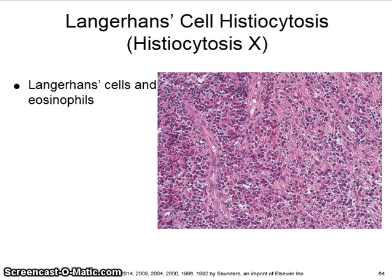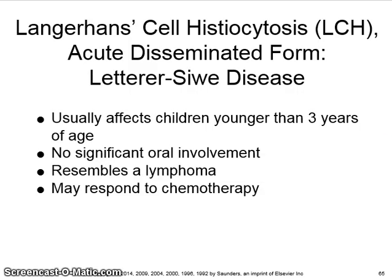Langerhans cell histiocytosis, also known as histiocytosis X, microscopically shows Langerhans cells and eosinophils. The acute disseminated form of LCH is known as Letterer-Siwe disease. It usually affects children younger than three years of age, with no significant oral involvement. It resembles a lymphoma and may respond to chemotherapy.